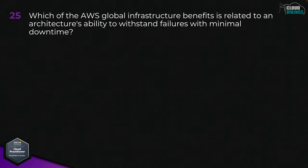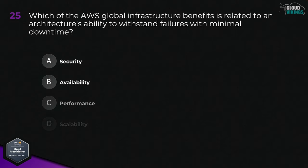Question twenty-five: which of the AWS global infrastructure benefits is related to an architecture's ability to withstand failures with minimal downtime? Options are: A, security; B, availability; C, performance; D, scalability; or E, flexibility. The correct answer is B, availability.